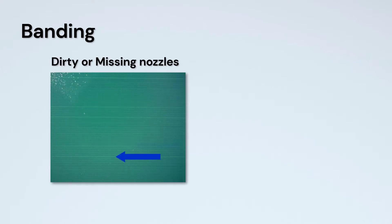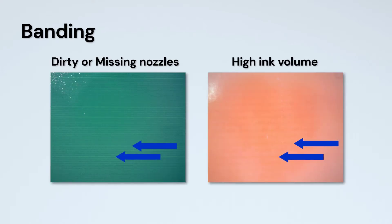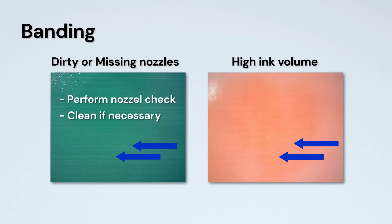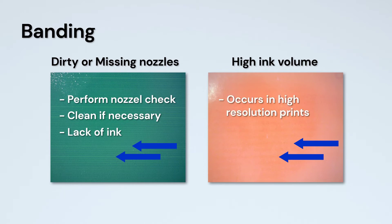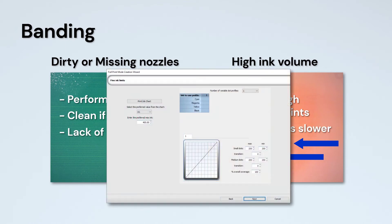Finally, there is the issue of banding. Banding is caused by either missing nozzles or too high of an ink volume. Always perform a nozzle check and clean if necessary before making a print mode. Missing nozzles can also cause banding due to a lack of ink — this is a hardware issue that needs to be addressed. Banding can also be caused by too high of an ink volume that occurs in high resolution prints, where the print speed is slower allowing the ink to build up. This can be fixed by changing the ink levels in the print mode creation.